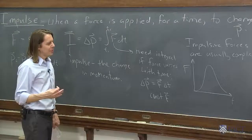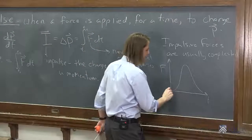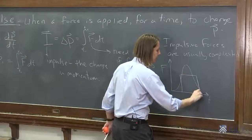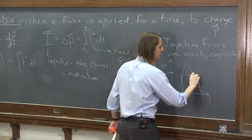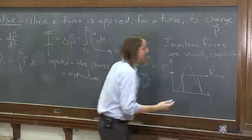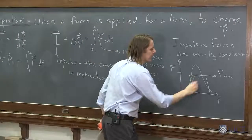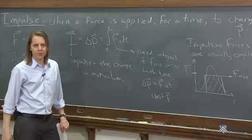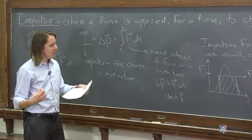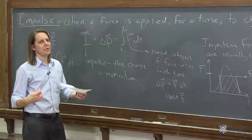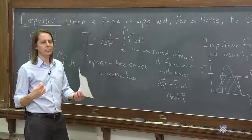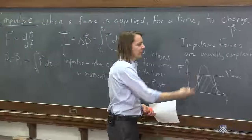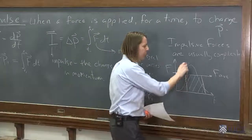Often when we do problems with impulse, we define just the average force. We could say it was like a rectangular pulse at F average, where you pick that average so the area — F average times delta T — equals the area under the true impulsive curve. So in problems you'll often see something like: an average force of 20 newtons for 5 milliseconds. You just multiply 20 newtons times 5 milliseconds to get the impulse, without worrying about what the force really looked like in real time.